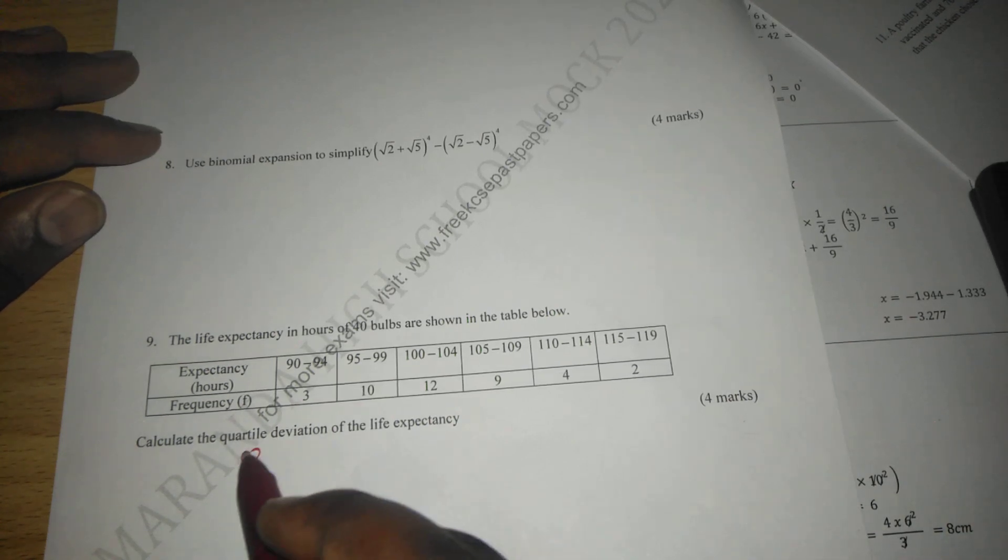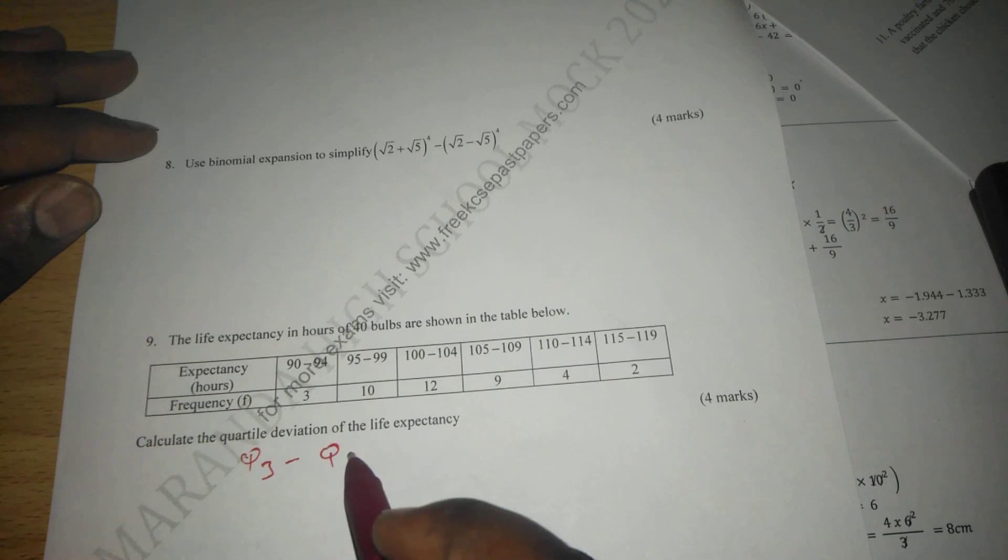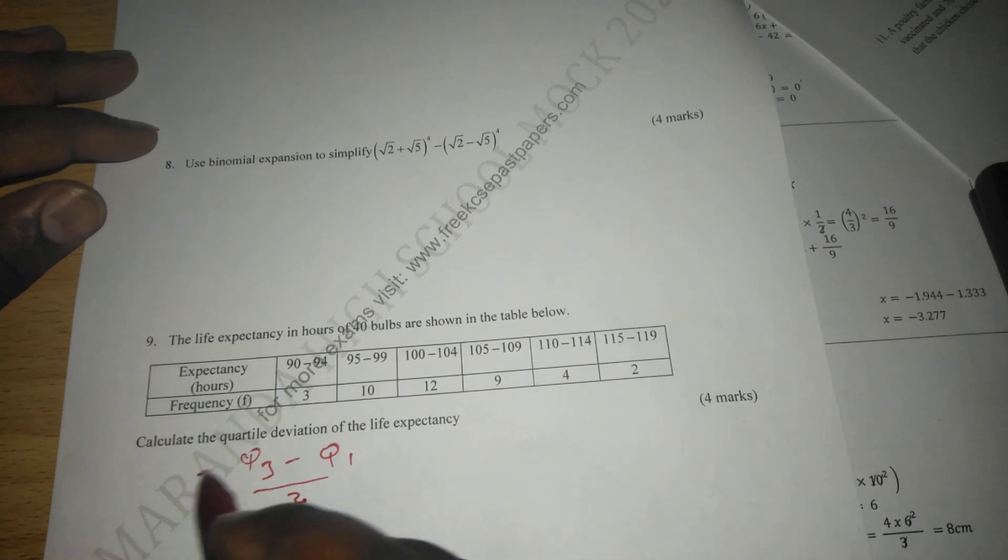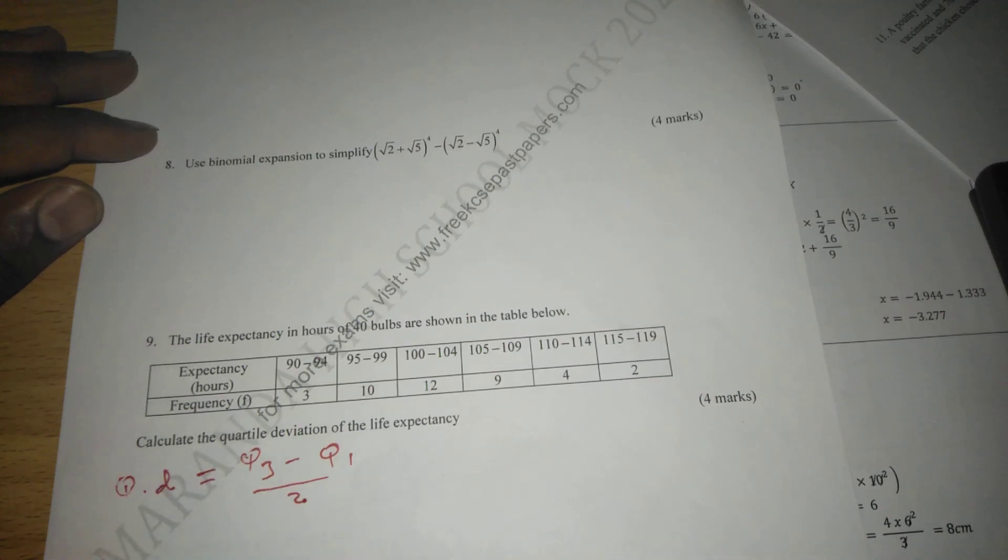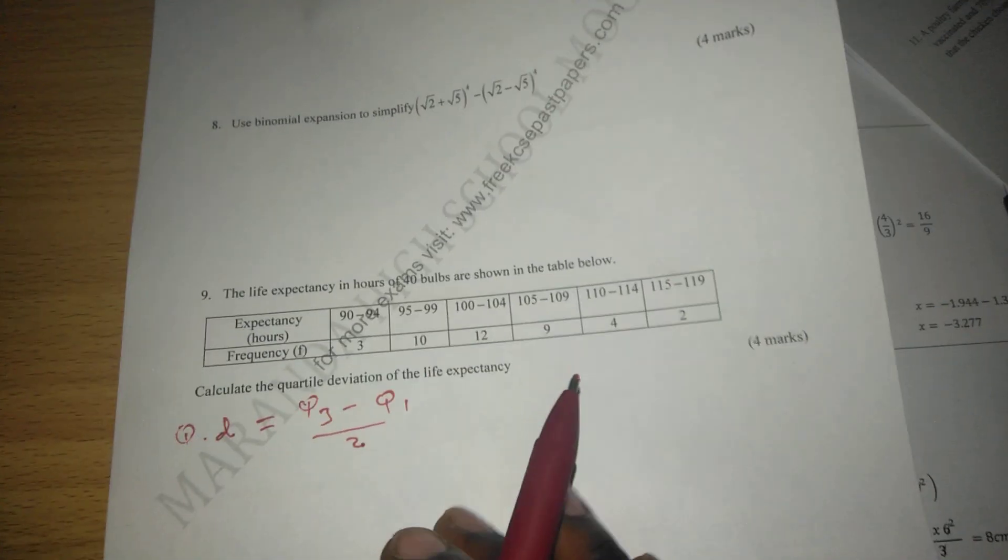So when we take Q3 and we subtract Q1, then we divide by 2. This gives us the quartile deviation. So quartile deviation is Q3 minus Q1 divided by 2.